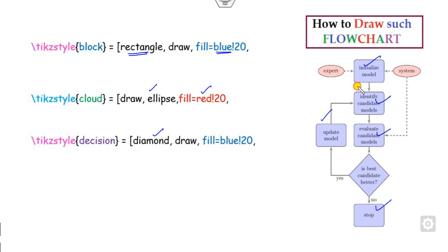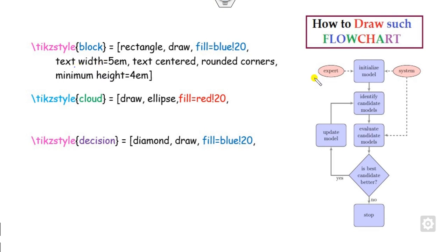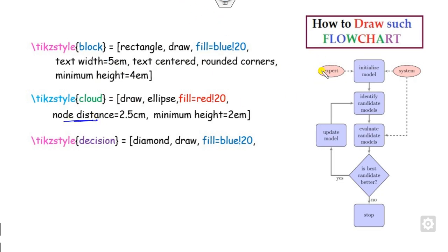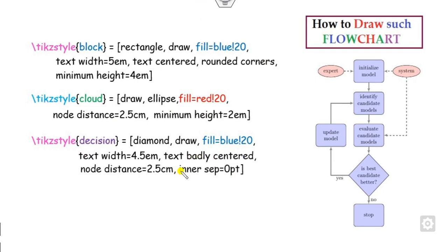Once you have defined the colors, another thing is to define how much width and height you want. You can define the text width — this is the value of the text written here, like 'initialize model.' The text needs to be centered, and this is the rounded corner. You can see this is a rectangle but with a rounded corner, and the maximum height is 4em. Similarly for the ellipse, you can define the node distance — how much distance you want from the boundaries. For the decision diamond, the node distance will be 0, and the text is centered, with width and node distance defined accordingly.